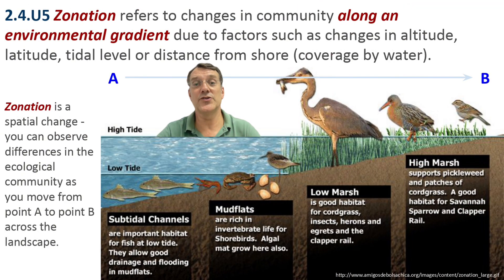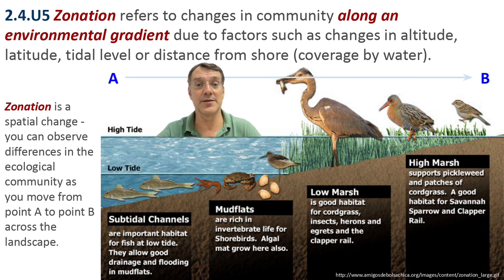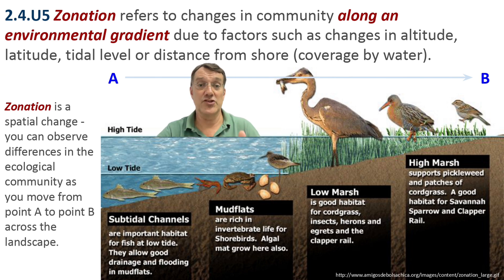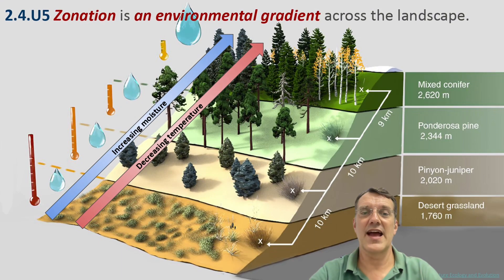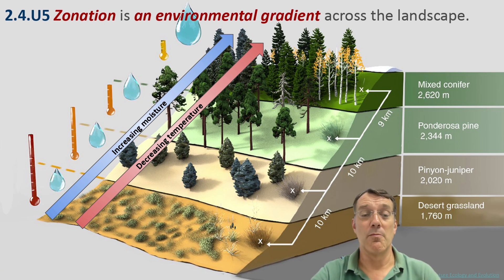Zonation refers to changes in community structure along an environmental gradient. Unlike succession, which is a change over time, zonation is a spatial phenomenon where you can observe different communities as you move across the landscape from point A to point B. This coastal example shows how distinct zones develop from subtidal channels to high marsh habitats. As we move up a mountain, both moisture and temperature change, creating distinct vegetation zones.